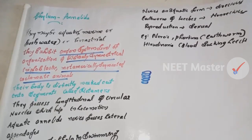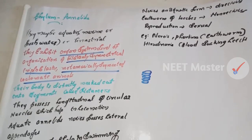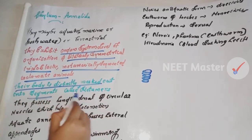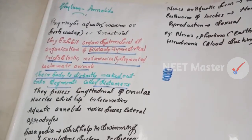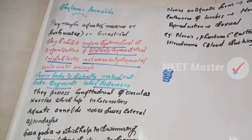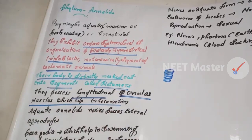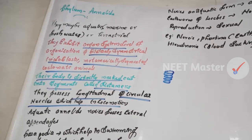Annelida are bilaterally symmetrical, triploblastic, metamerically segmented, coelomate animals. The body is distinctly divided into segments called metamers. They possess longitudinal and circular muscles which help in locomotion.